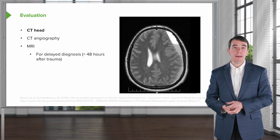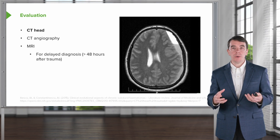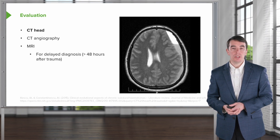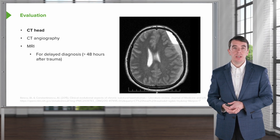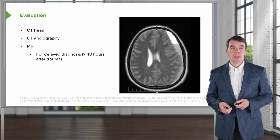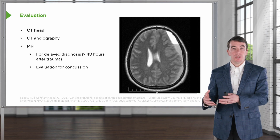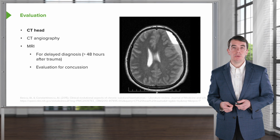MRI scan is commonly performed in these patients, and here we're not just looking for bleeding or fractures, but also internal injury to the brain itself. This is an excellent modality for looking for delayed onset of hemorrhage or other deficits within the first 24 to 48 hours after trauma. It is used for more moderate to severe concussions, but is not required for all patients with a mild traumatic brain injury.